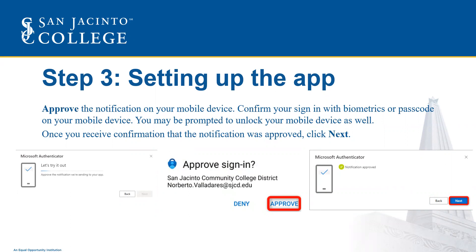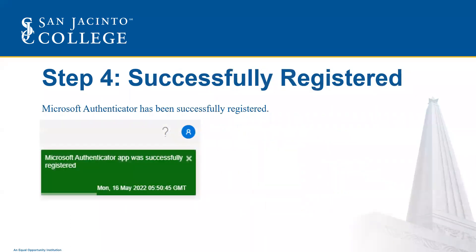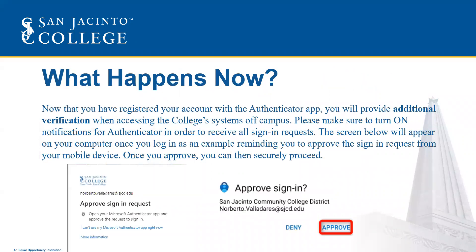Once you receive confirmation that the notification was approved, click Next. Microsoft Authenticator has now been successfully registered. Now that you have registered your account with the Authenticator app, you will provide additional verification when accessing the college's systems off campus.